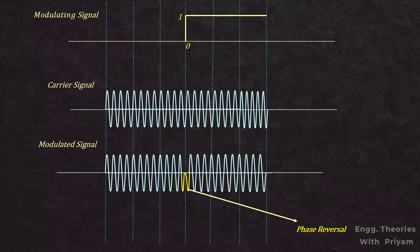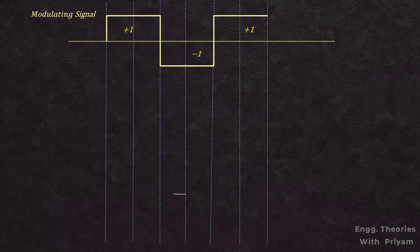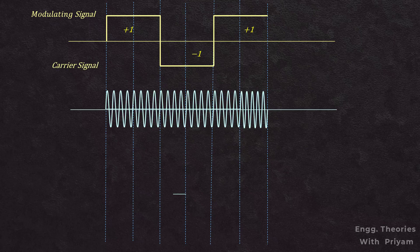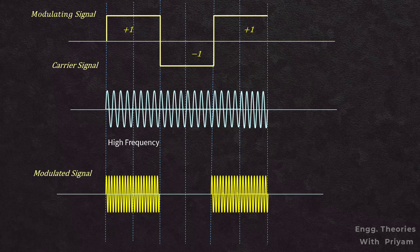To see this more clearly, let's take a square wave as the modulating signal. A unit amplitude square pulse is a signal that stays at a constant value of 1 for a specific duration, then abruptly drops to another constant value for the remaining time. For frequency modulation with this signal: when the amplitude stays at 1, the FM signal has a high frequency; when it equals minus 1, the FM signal has a low frequency.